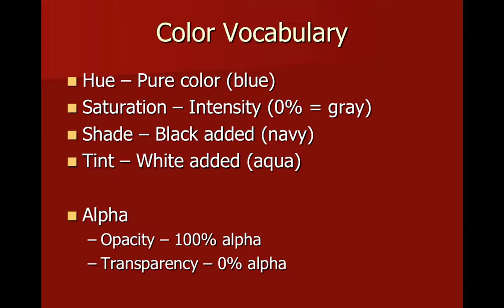Alpha is an additional term we need to know for computer graphics because alpha stores transparency. So 100% alpha would give us a very opaque, solid color, and 0% alpha would give us a completely transparent color. It'd be completely invisible. These are some terms we need to know in order to talk about color.